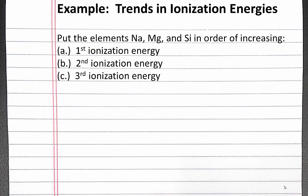In this video, we'll look at an example involving trends in ionization energies. Our problem reads: put the elements sodium, magnesium, and silicon in order of increasing first ionization energy, second ionization energy, and third ionization energy.